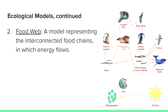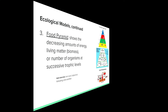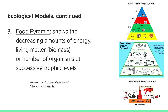A bunch of food chains clustered together make up a food web. In this diagram, for example, six different organisms eat krill and the leopard seal eats four different organisms, showing several interconnected food chains. A food pyramid allows for the visual representation of decreasing amounts of energy, living matter called biomass, or the number of organisms at successive trophic levels. Successive just means following one another.